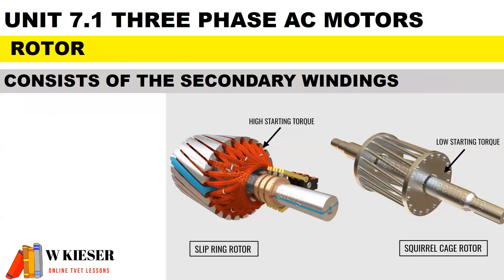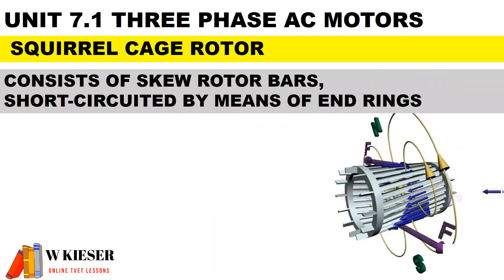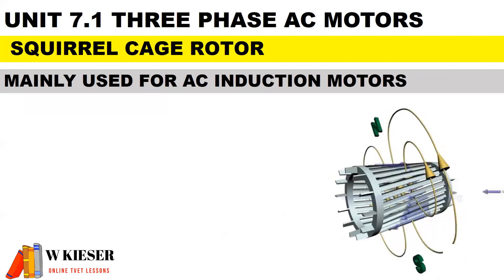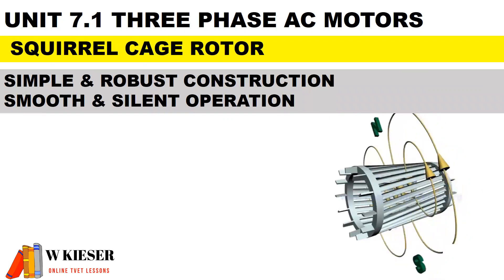In terms of the rotor, it's the rotating part and consists of the secondary windings. We get two main types of rotors: a squirrel cage rotor and a wound type rotor. For the squirrel cage rotor, it consists of skew rotor bars, usually made of aluminum, short-circuited by means of end rings. They are mainly used for AC induction motors. They have very simple, robust construction with smooth and silent operation, and also require very little maintenance.